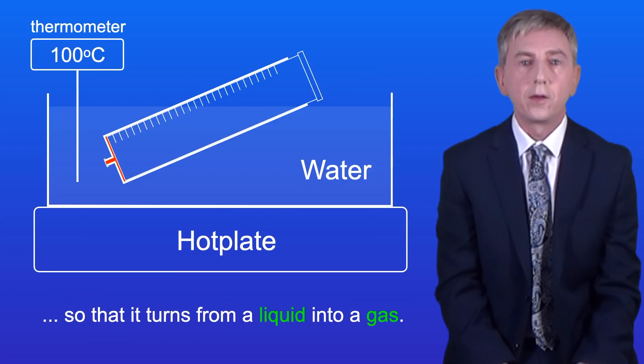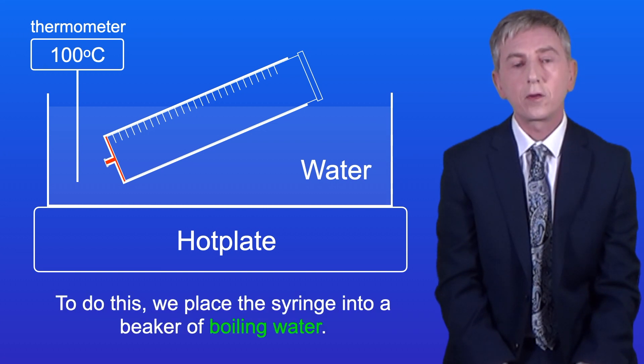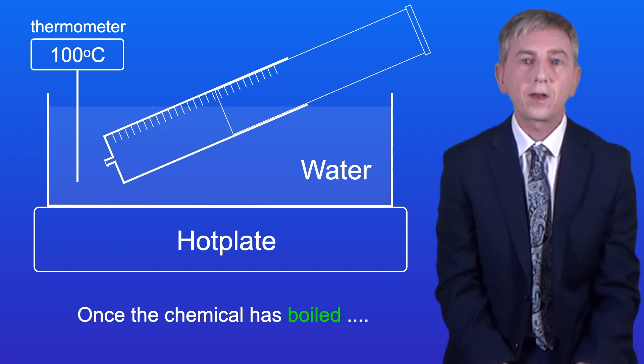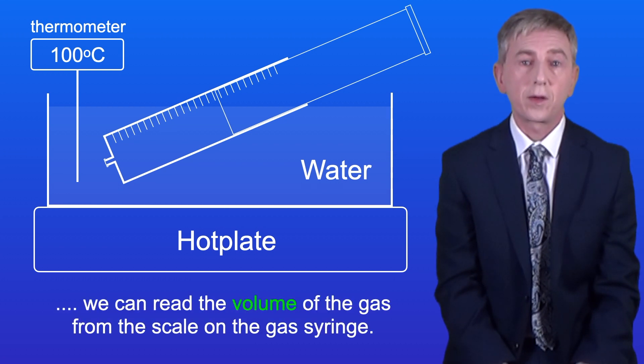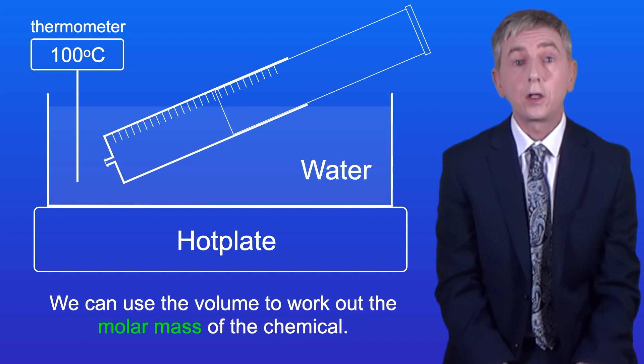To do this we subtract the initial mass of the empty syringe plus the cap from the mass of the syringe containing the chemical plus the cap. Now we need to boil the chemical so it turns from a liquid into a gas. To do this we place the syringe into a beaker of boiling water. Once the chemical is boiled we can read the volume of the gas from the scale on the gas syringe and we can use the volume to work out the molar mass of the chemical.